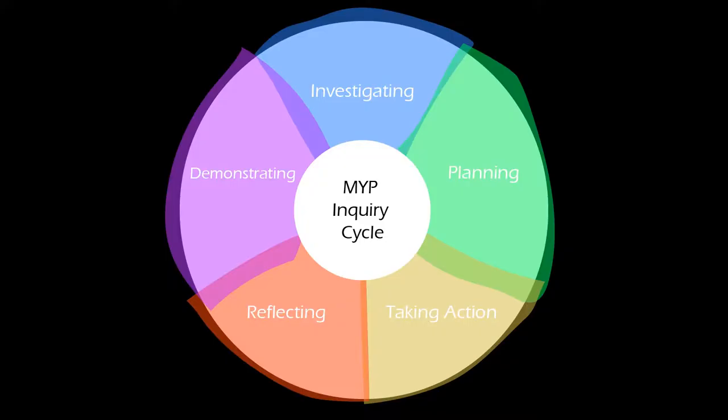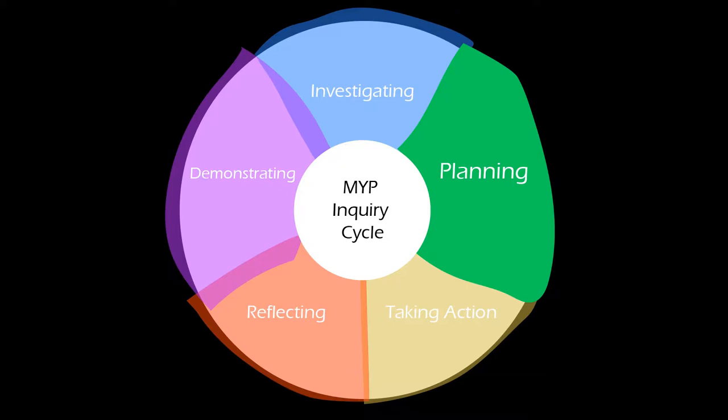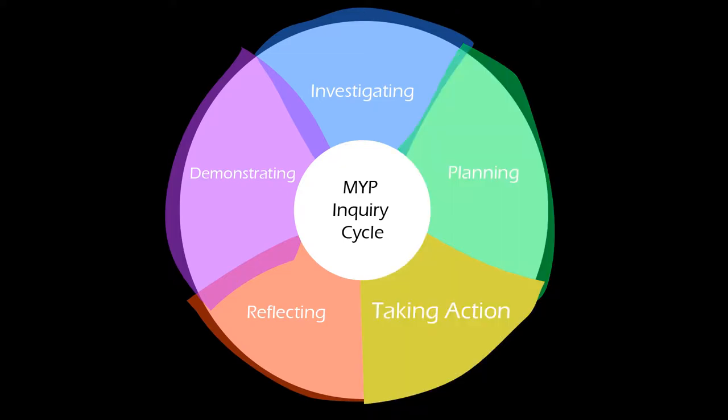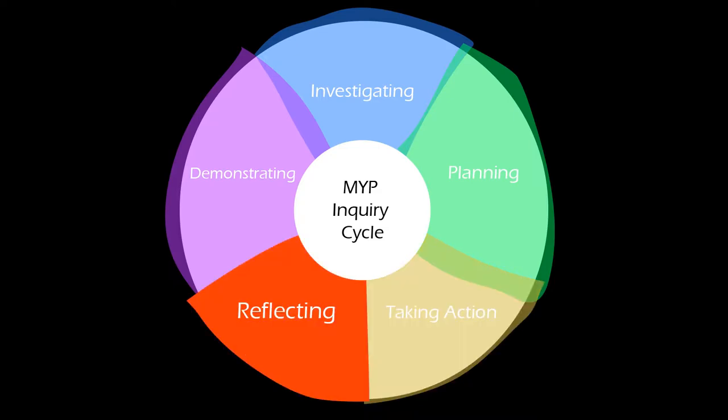One of the supervisor's roles is to help you through the MYP inquiry cycle. The inquiry cycle, a version of the design cycle, has five major stages. Investigating, where you research your ideas and learn about your topic. Planning, where you make an action plan and a success rubric for your project. Taking action, where you achieve the goal — you do the thing you planned to do. Reflecting, where you look back on your project and consider its strengths, weaknesses, and lessons to be learned.